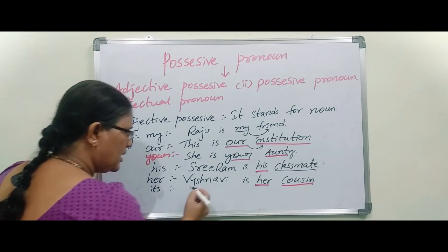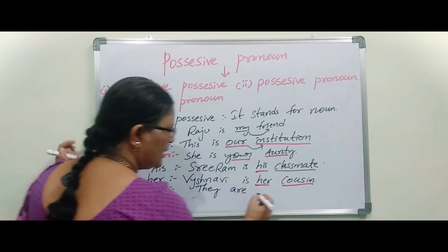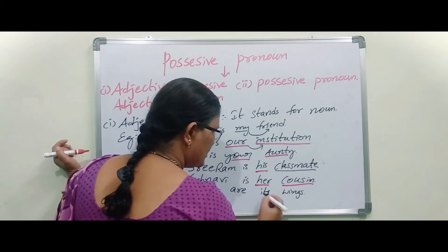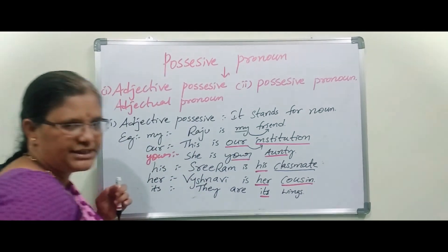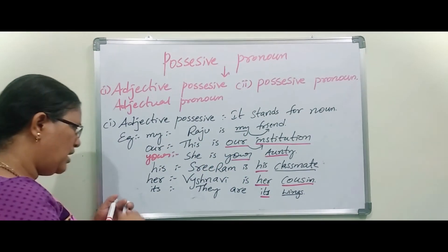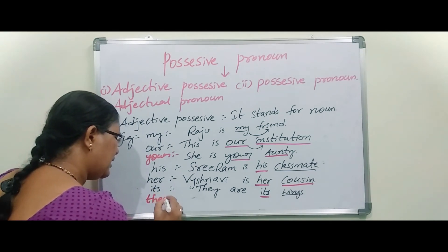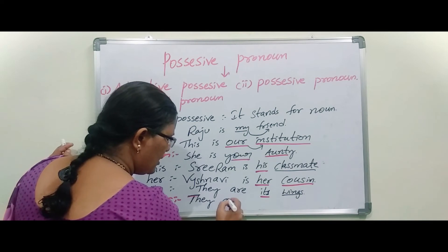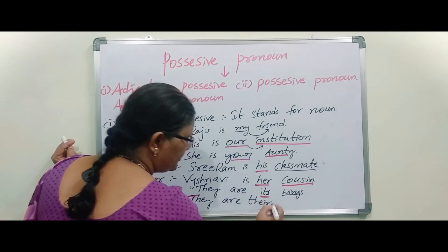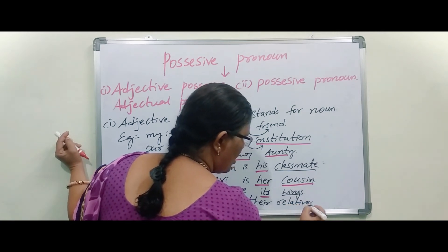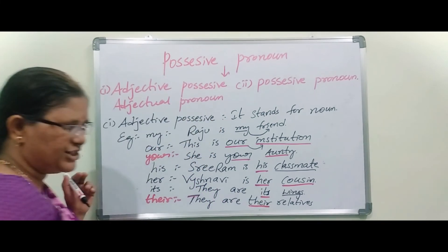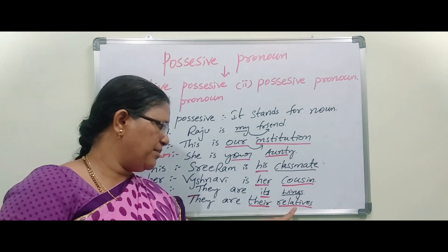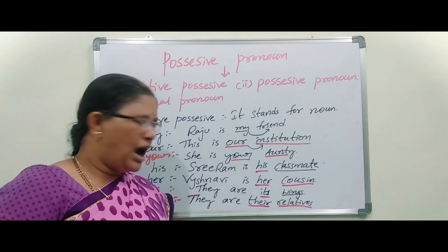Next: 'its.' They are its wings. It comes under Adjectual Pronoun because it is talking about a common noun. Next: 'their.' They are their relatives. 'Their' comes under Adjectual Pronoun because it is talking about 'relatives' — whose relatives? It is giving information about this common noun.